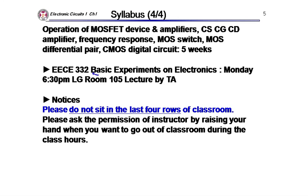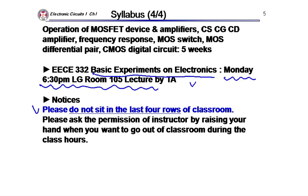For the lab, Basic Experiments on Electronics — you are supposed to come to this room at 6:30 PM every week. There will be a pre-report for the lab and a simple quiz. Please do not sit in the last rows — come forward. If you want to go out of the classroom during class hours, ask permission first.